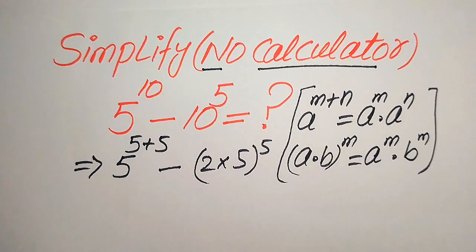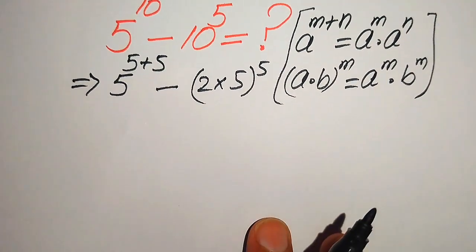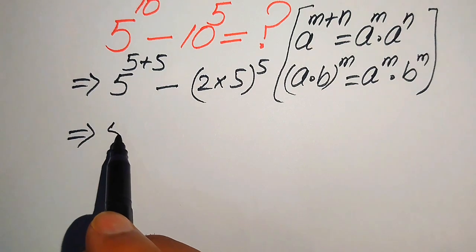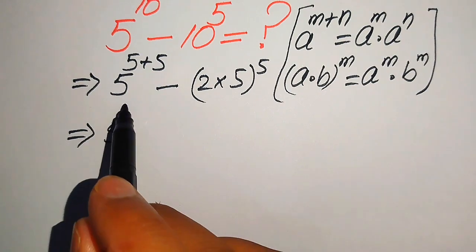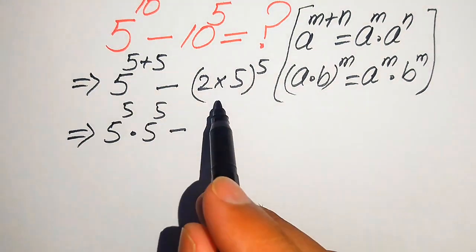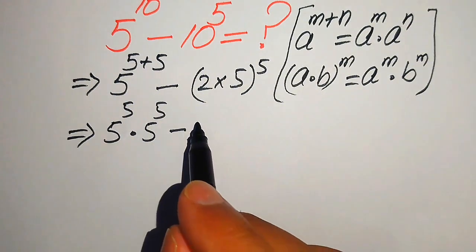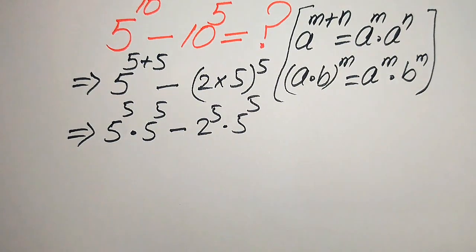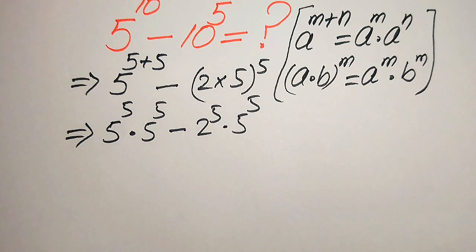According to these two exponent laws, we write these two terms as: first we break this exponent — it will be written as 5 to the power of 5 multiplied by 5 to the power of 5, minus 2 to the power of 5 multiplied by 5 to the power of 5. Now you see both terms involve 5 to the power of 5.